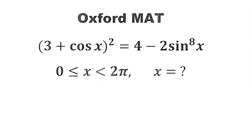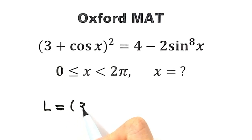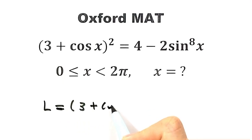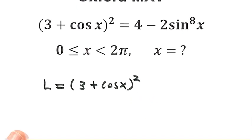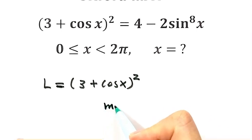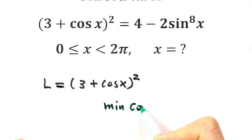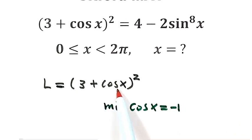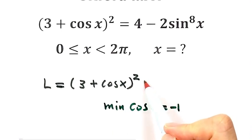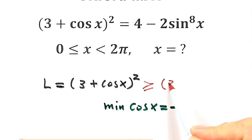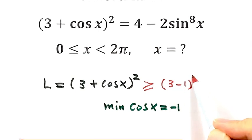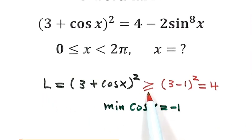Let's start from the left hand side. The left hand side is (3 + cos x) whole squared. Because the minimum value of cosine x is negative 1, if we substitute negative 1 for cosine x, the whole expression is bigger than or equal to (3 − 1) squared, which equals 4. So the left hand side is bigger than or equal to 4.